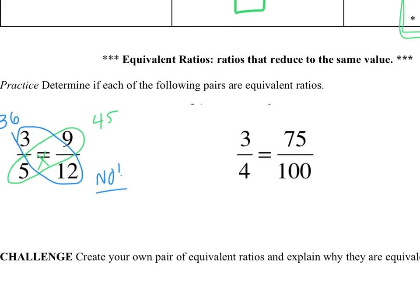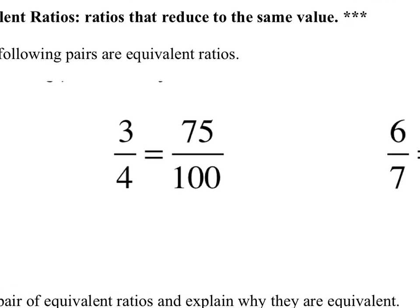In our next example, we have 3 over 4 equals 75 over 100. The first thing I do is I draw my band-aid, and I do 4 times 75. You might not know that one in your head right away, but 4 times 75 when you type it into a TI-84 is 300.